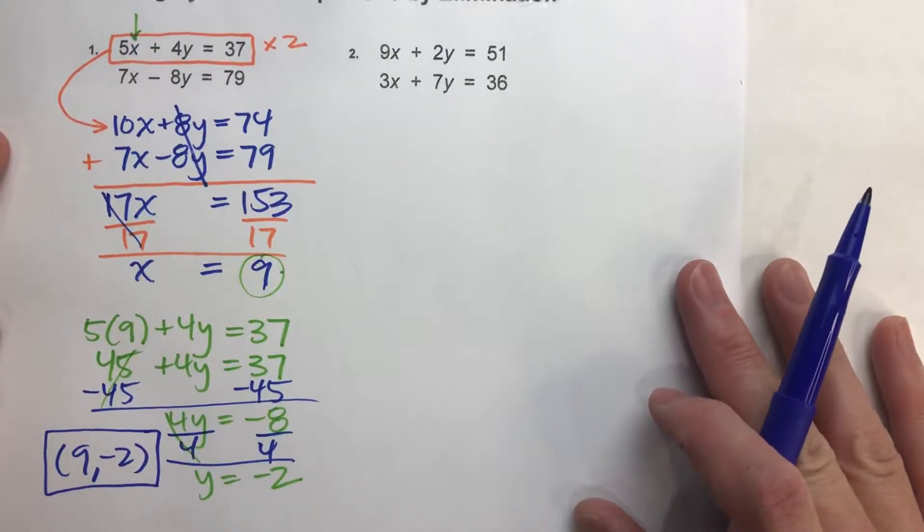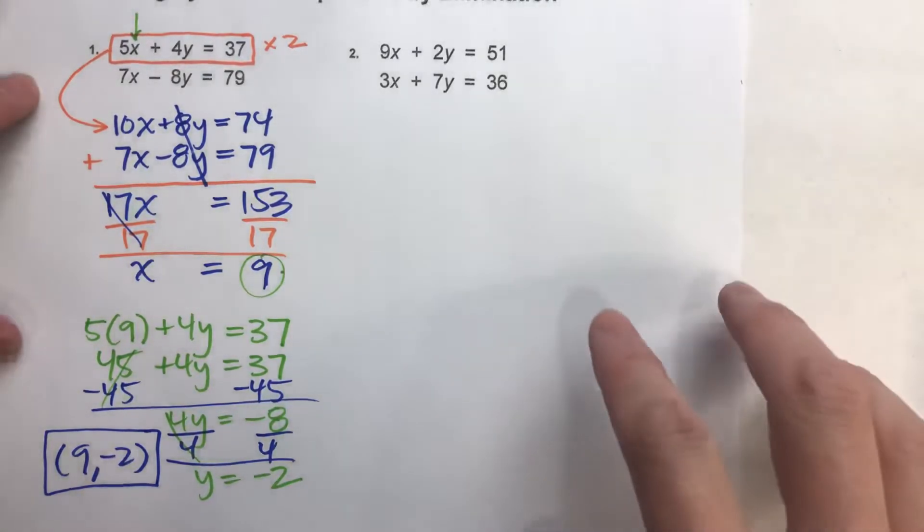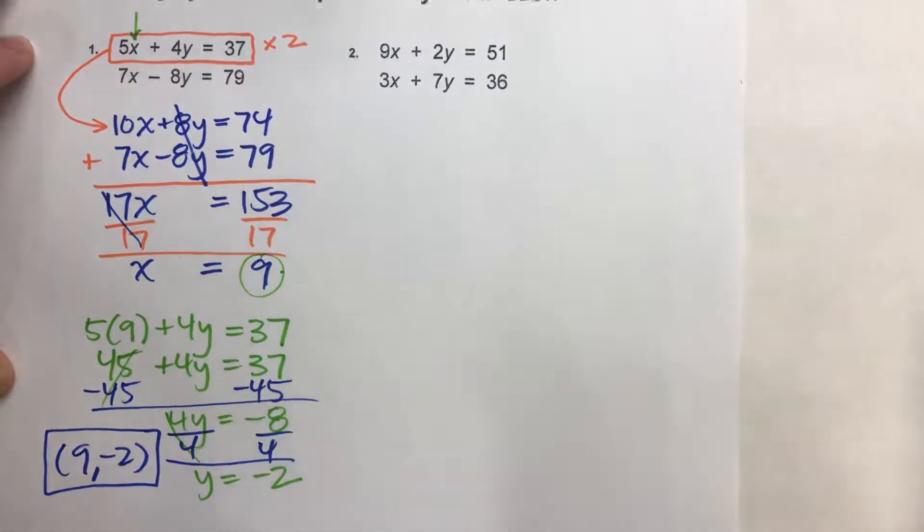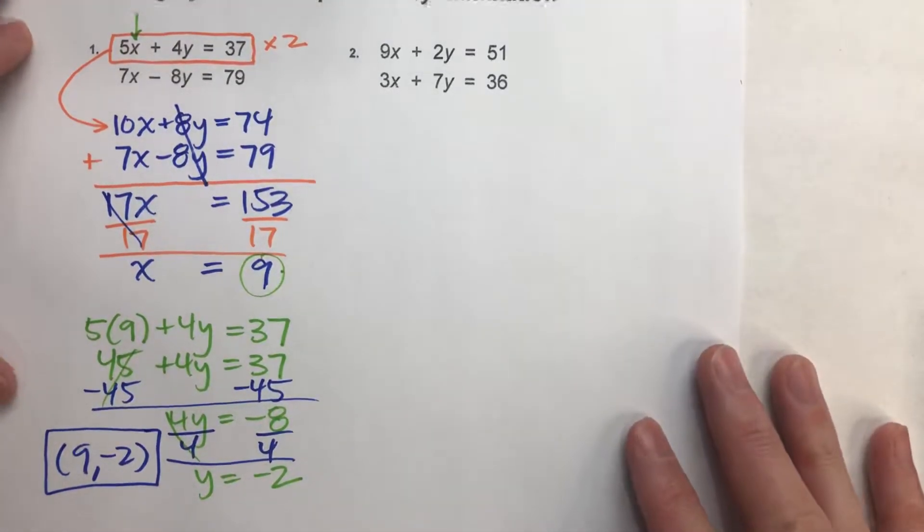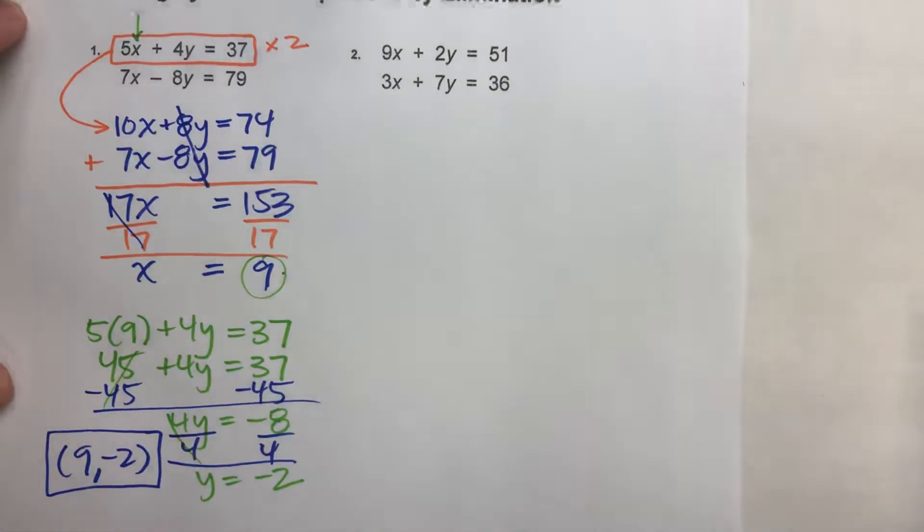So really, that first step is the trickiest. What we're looking for is a way to multiply one of the equations so that we can match up either the x's or y's and eliminate one of them. So let's do another example so we can see it again.